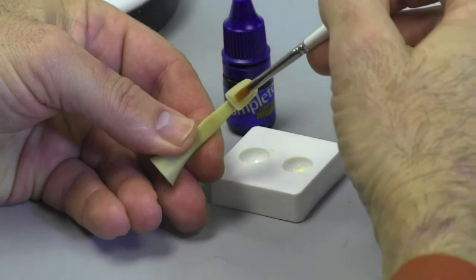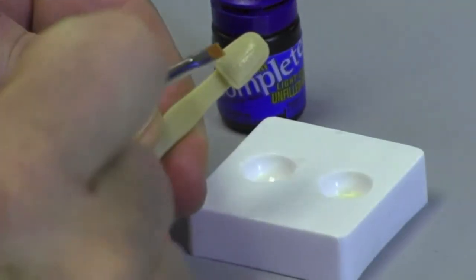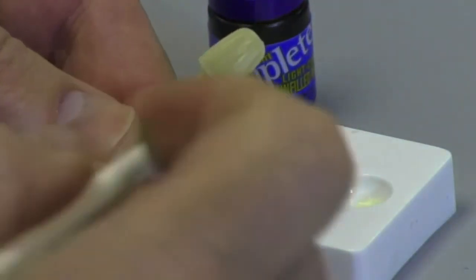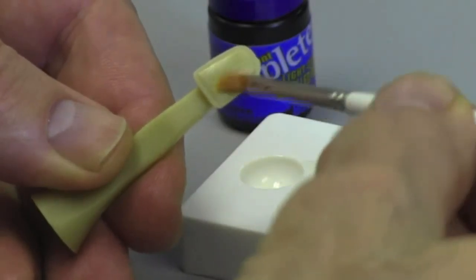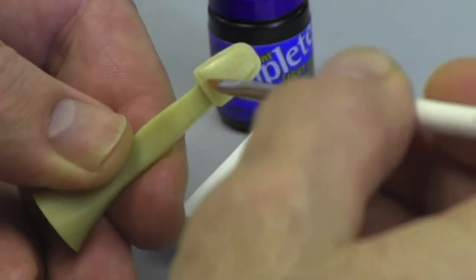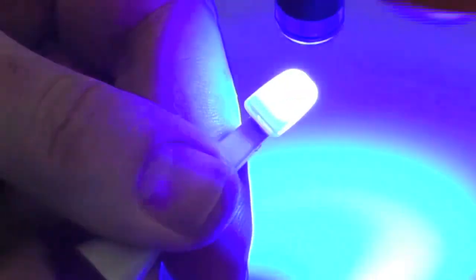In your practice, of course, you'd be using your traditional adhesive. If you're looking for a really good one, the Cosmodent Complete comes in a packaging that allows you to do fourth generation or fifth generation bonding.